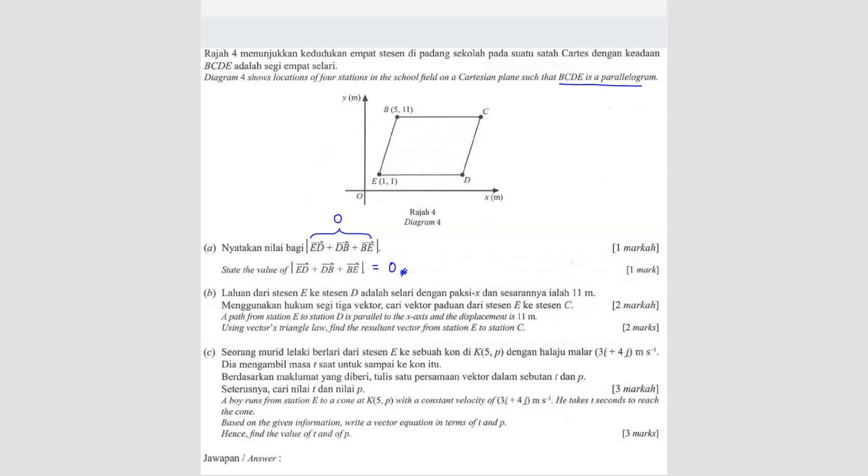Now question B, the path from station E to D is parallel to x-axis. So this one here is parallel to x-axis. And then they said the displacement is 11 meters. So you're moving to the right 11 meters means 11 units. That means you're moving to the right 11 units. Using vector triangle law, find the resultant vector from E to C. So they want to start by going from E to D first, and then from D, we go to C. So DC. So this is our triangle law. We have formed the equation and then we move according to the direction.